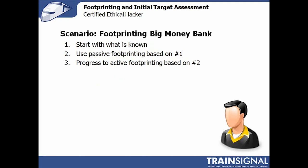We're footprinting Big Money Bank in our ethical hacking approach. Typically, we start the footprinting process after we have a defined scope, written agreements, and contracts — understanding who the emergency contacts are, who's authorizing the penetration test, and so forth. You'll start with whatever information is known, then begin with passive footprinting and feed that into the active footprinting approach.